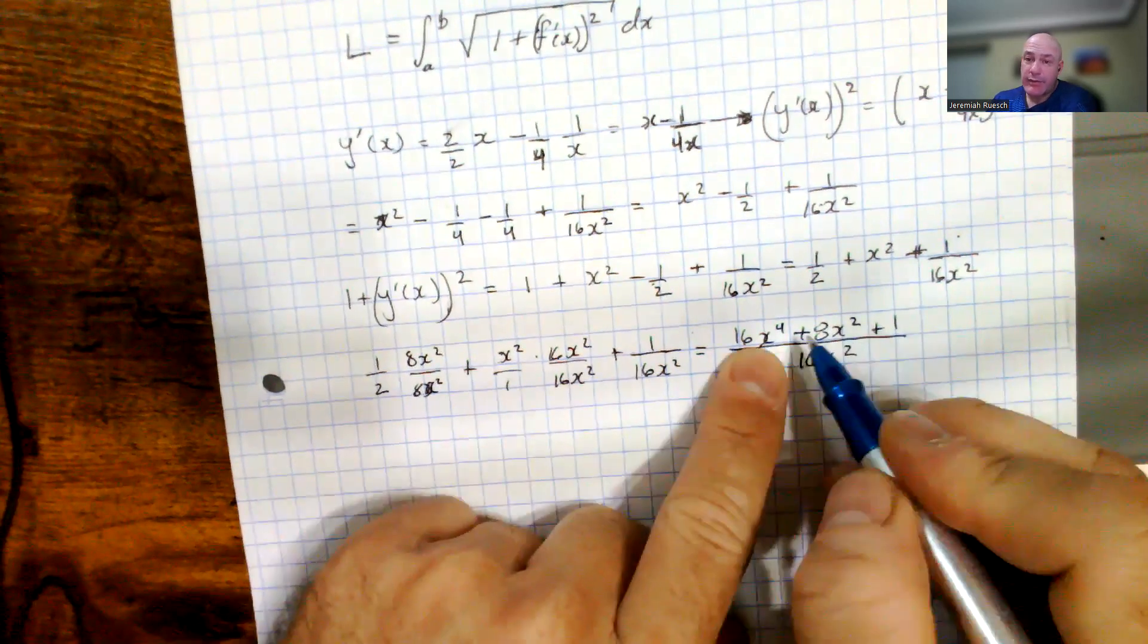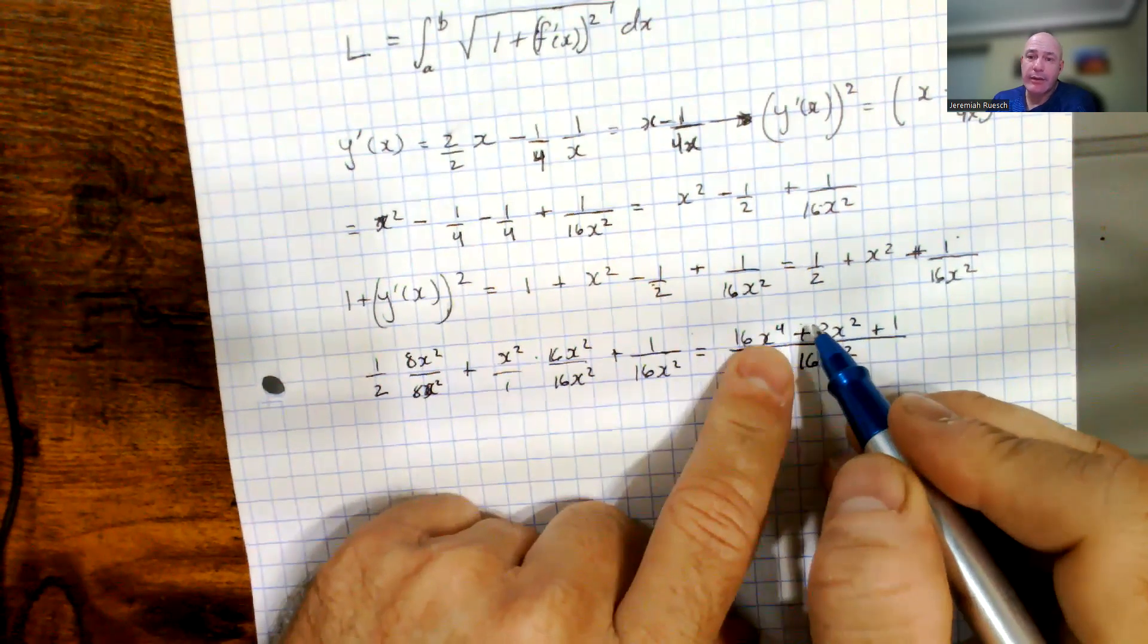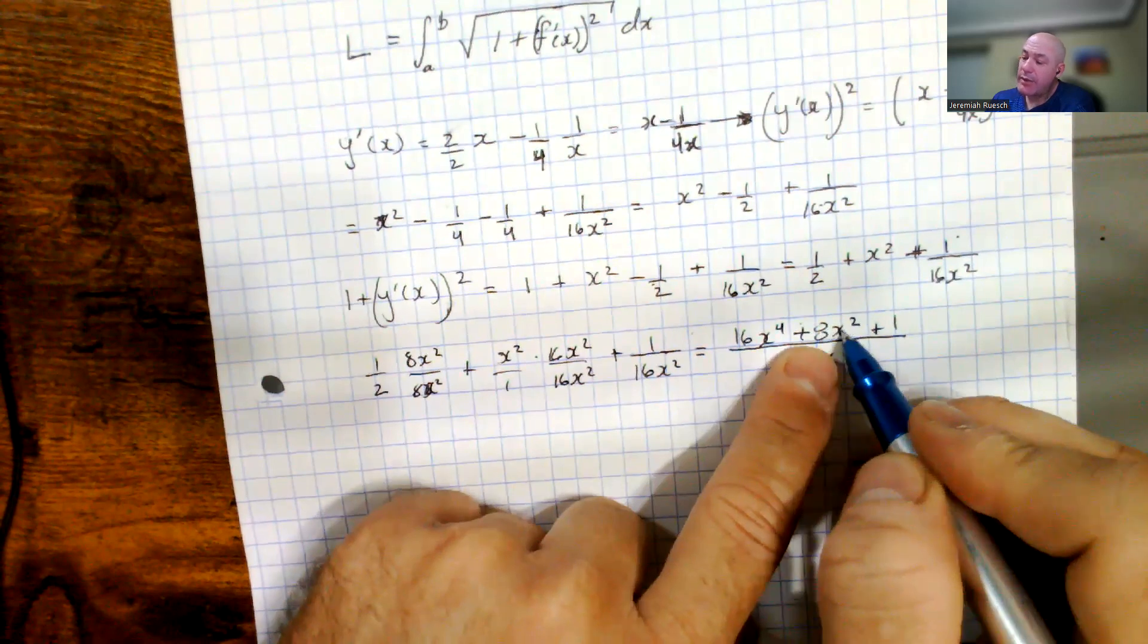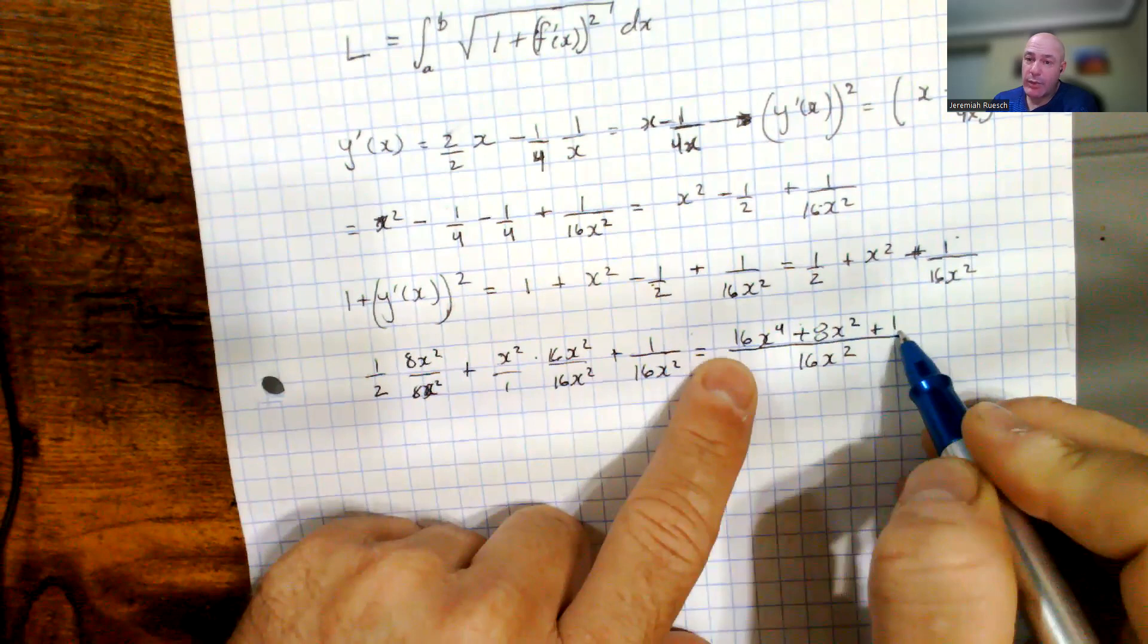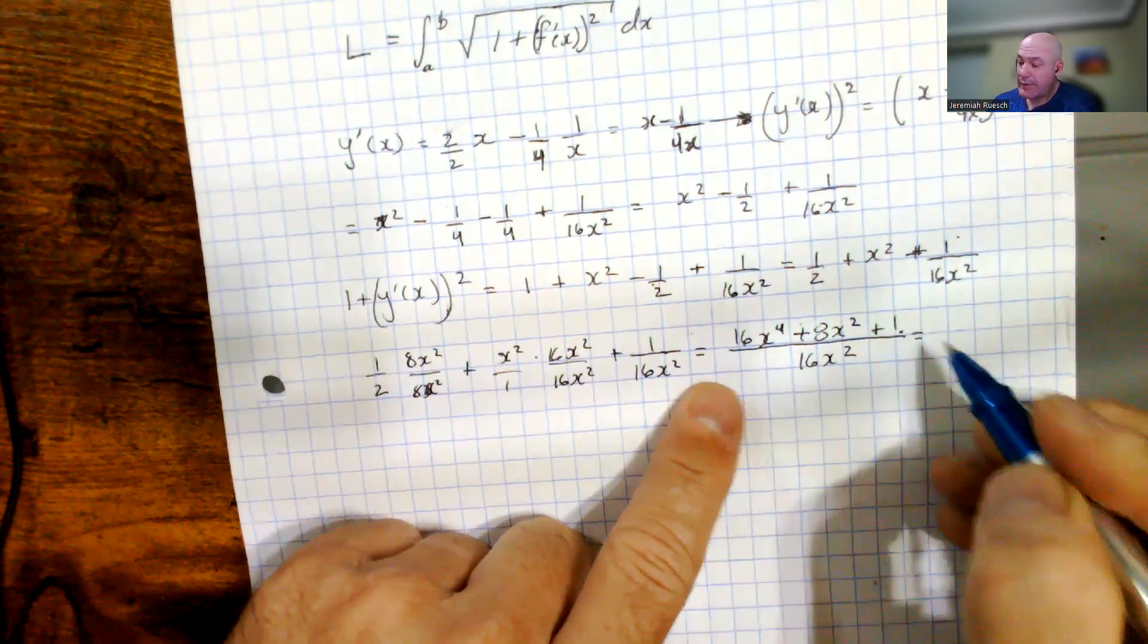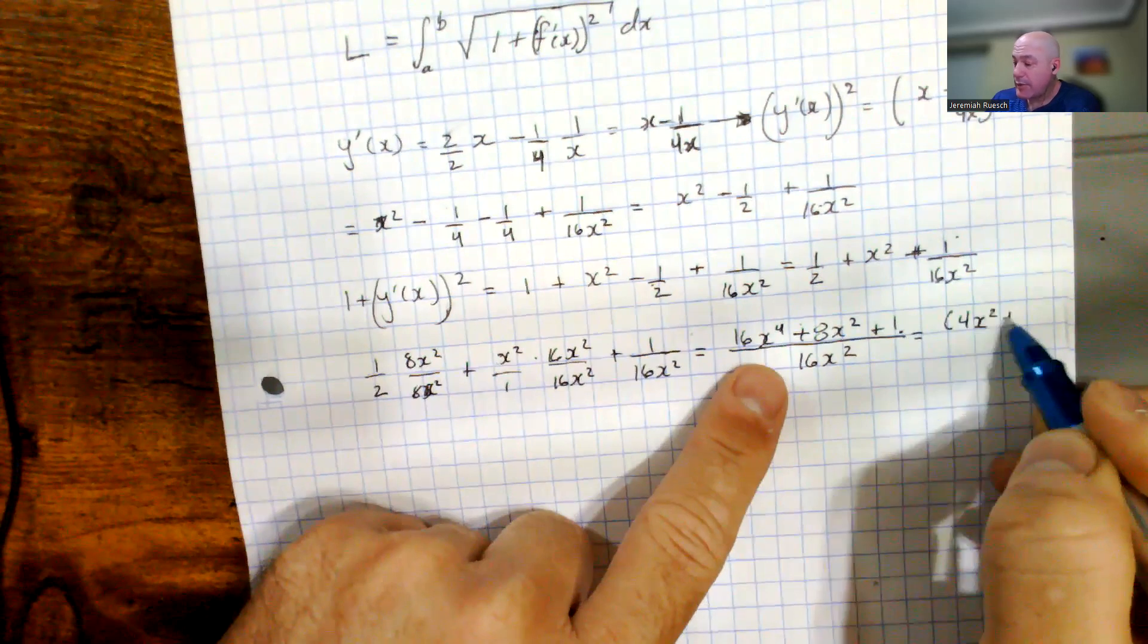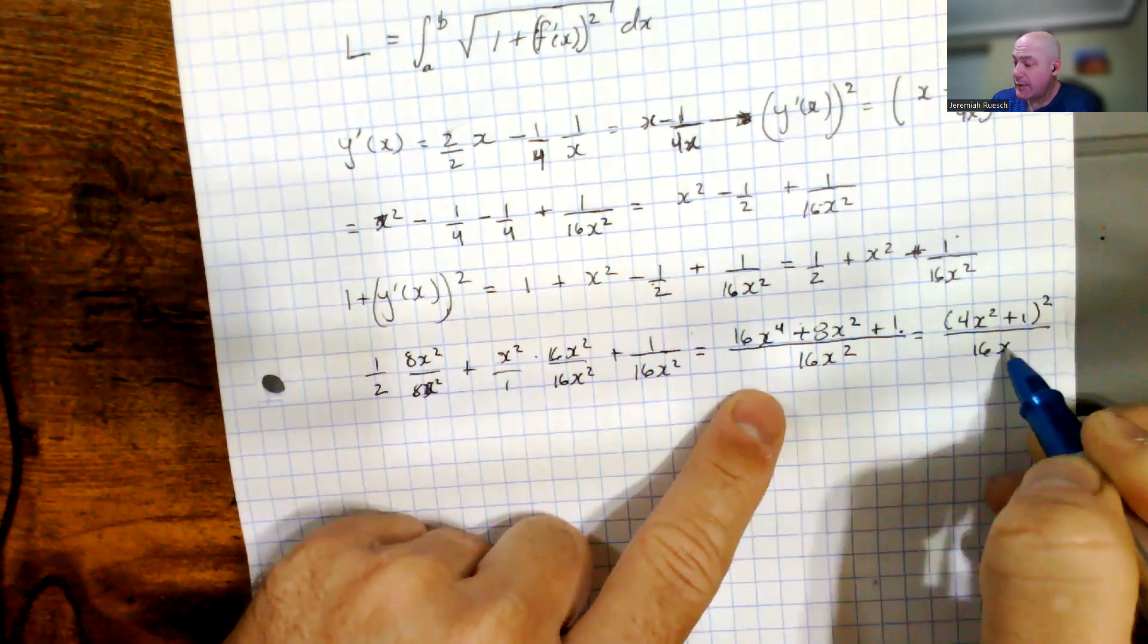Now what I notice here is this is an x to the fourth, and that's 4, or 16 is a perfect square, and then we have a double the normal amount here, so this looks actually like a perfect square trinomial of the form of 4x squared plus 1. In fact, that's exactly what this factors to, so this is 4x squared plus 1 squared divided by 16x squared.